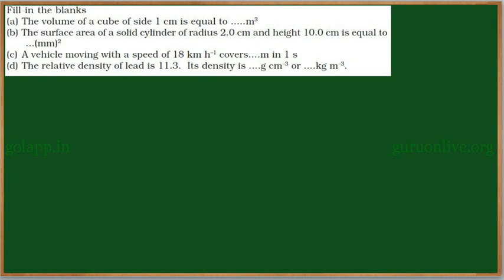See this problem, fill in the blanks. (a) The volume of the cube of side one centimeter is equal to dash meter cube. (b) The surface area of a solid cylinder of radius two centimeters and height 10 centimeters is equal to dash millimeter square. (c) A vehicle moving with a speed of 18 kilometer per hour covers dash meters in one second. (d) The relative density of lead is 11.3; its density is dash gram per centimeter cube or kg per meter cube.